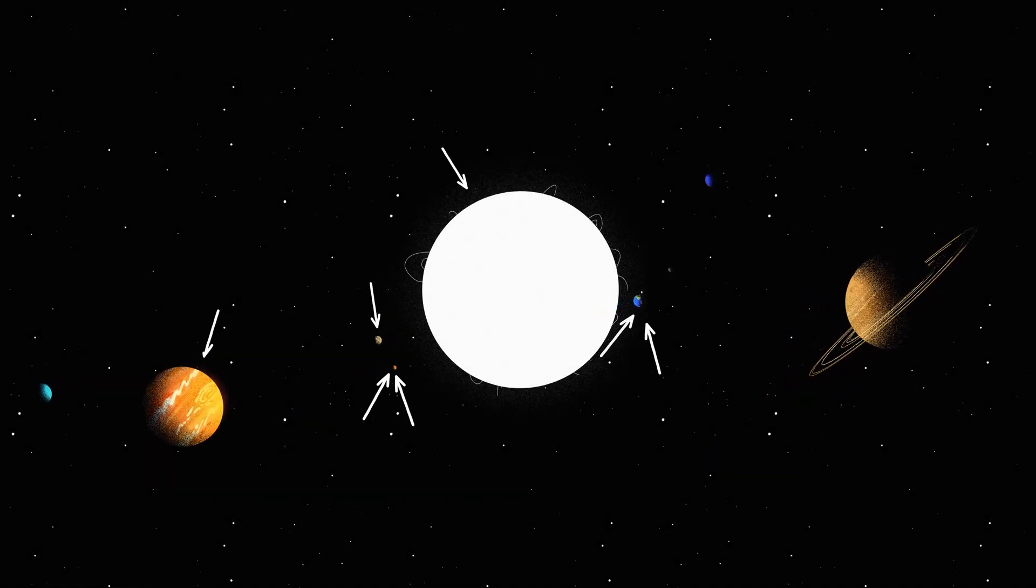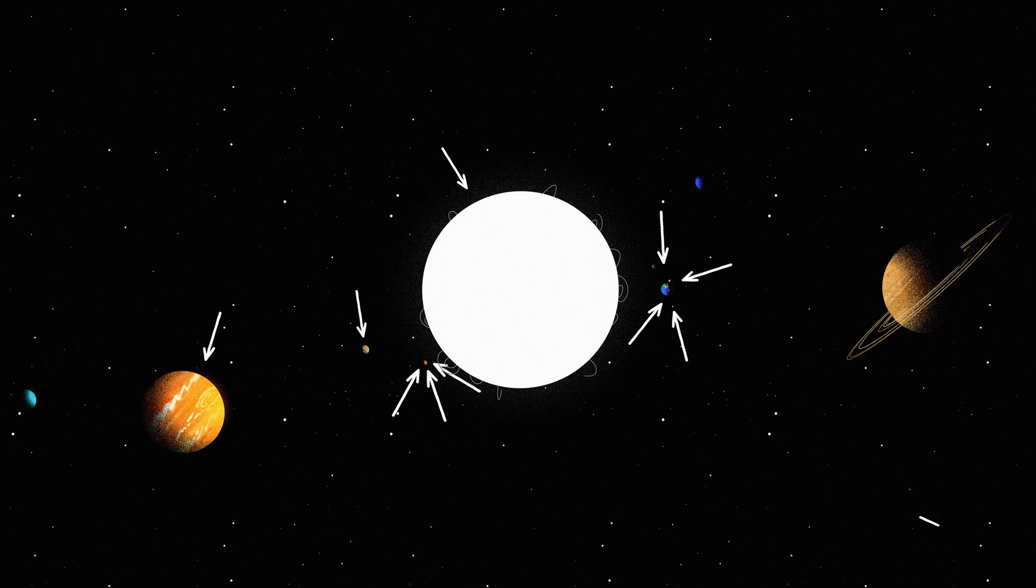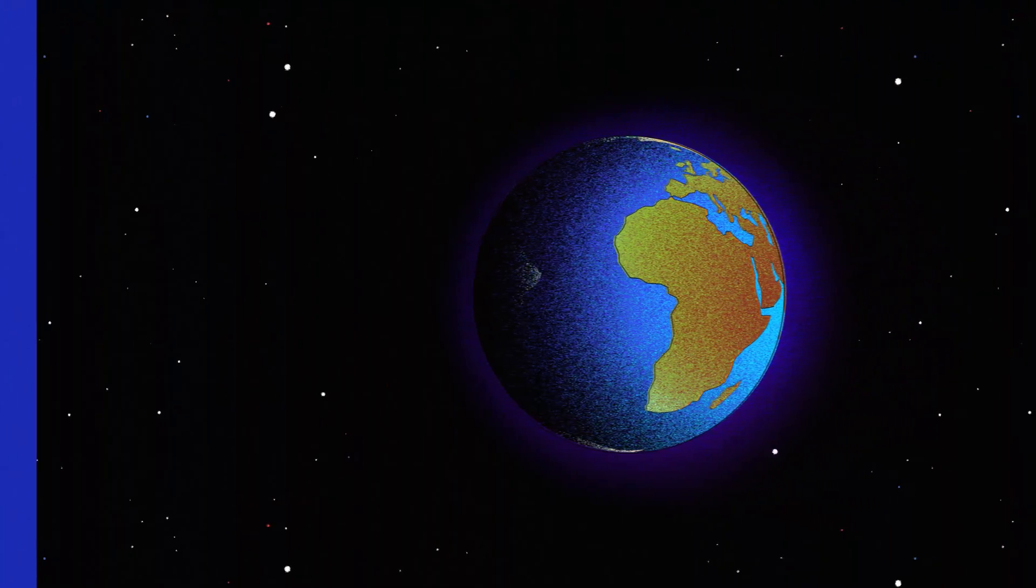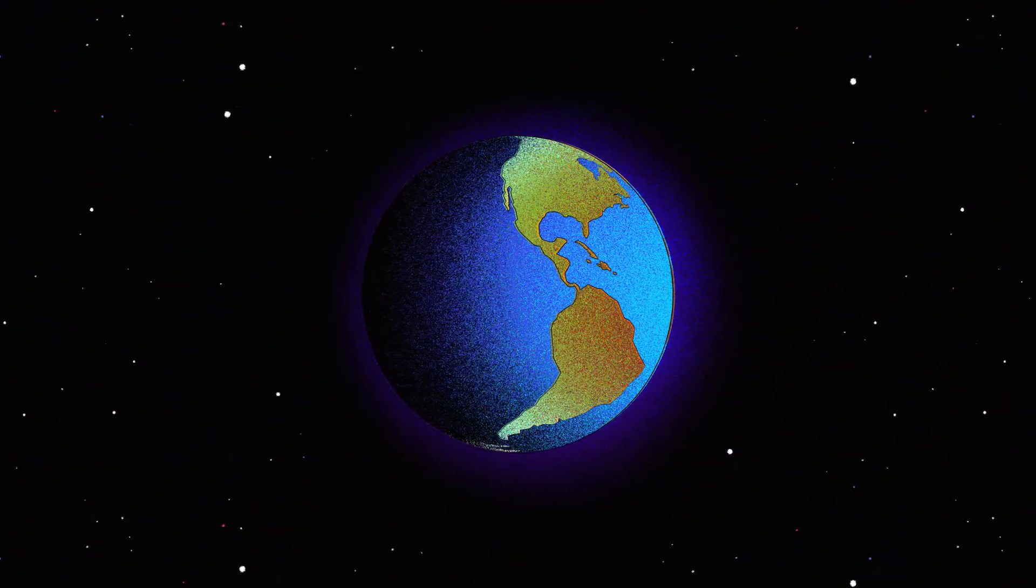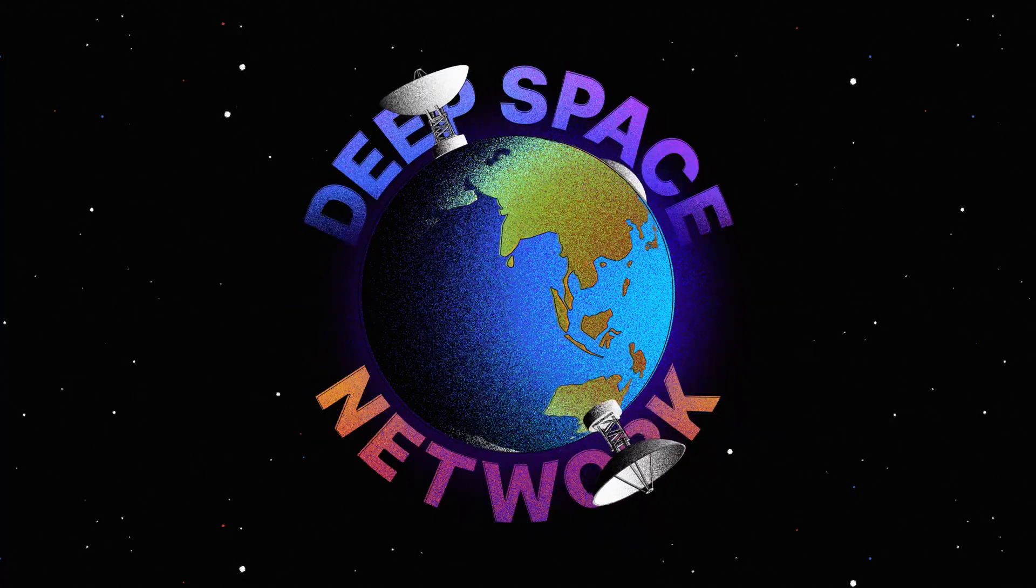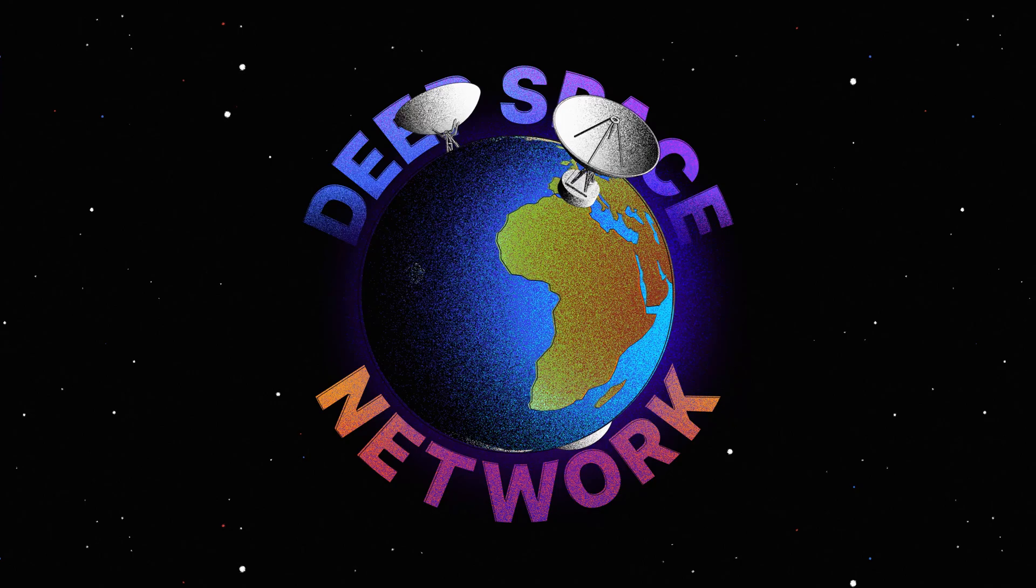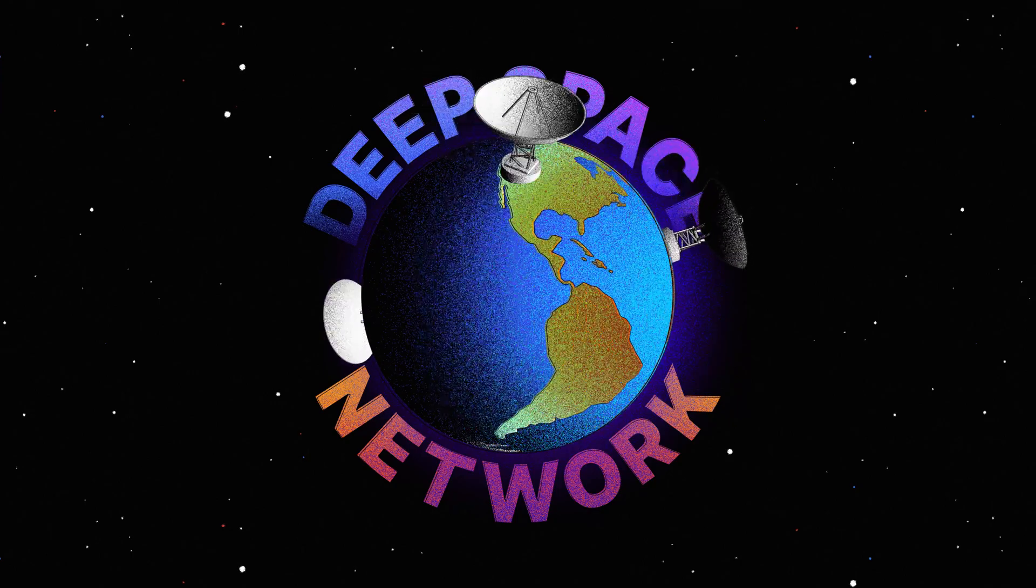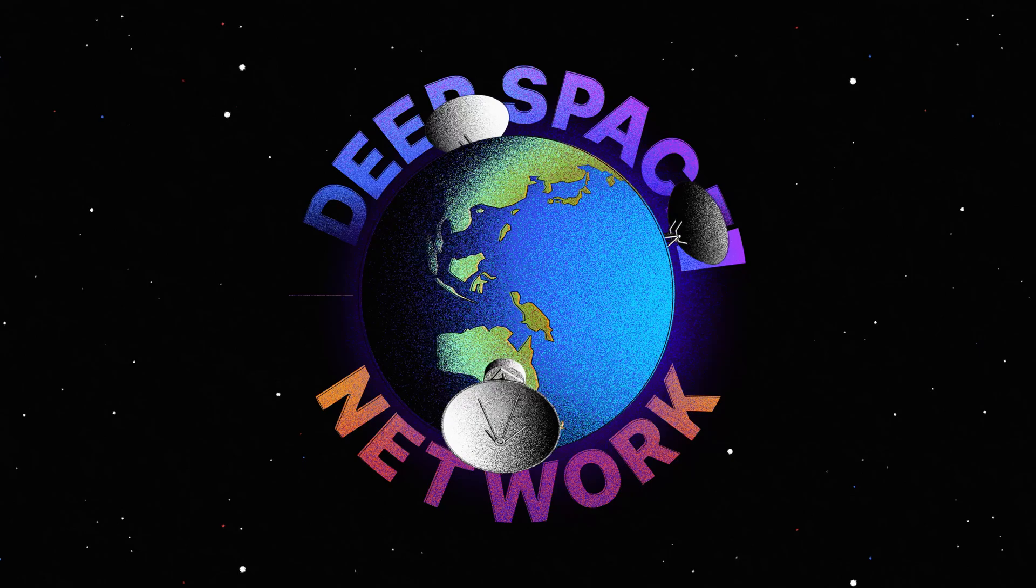NASA has dozens of robotic spacecraft exploring our solar system and beyond. Scientists and engineers communicate with and navigate faraway spacecraft using the Deep Space Network, NASA's international collection of giant radio antennas used to communicate with spacecraft at the moon and beyond.